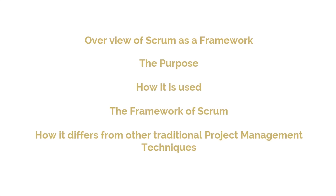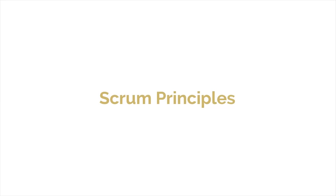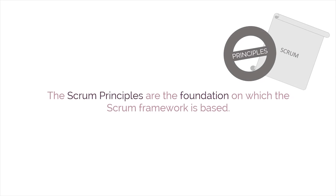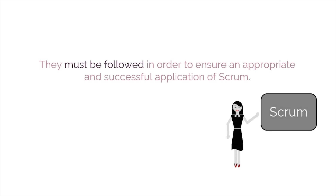Now that we have quite a bit of information about Scrum, it's time to share the ground rules governing Scrum as a framework. These ground rules are the Scrum principles, and the Scrum principles are the foundation on which the Scrum framework is based. The principles of Scrum can be applied to any type of project or organization, and they must be followed in order to ensure an appropriate and successful application of Scrum.